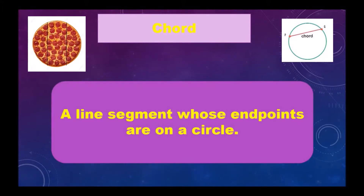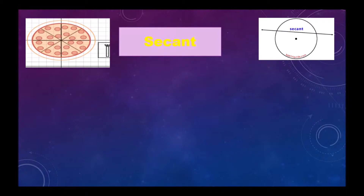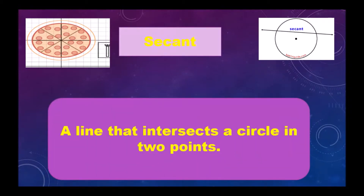Chord: a line segment whose endpoints are on a circle. See, the two points are on the circle. It is not compulsory that the line passes through the center. The biggest chord is the diameter.